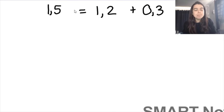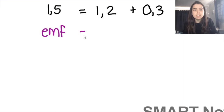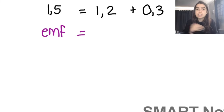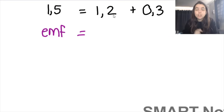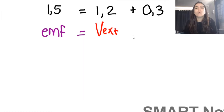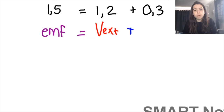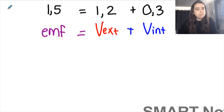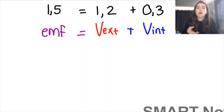In this example, 1.5 equals 1.2 plus 0.3. The 1.5 is the EMF — the voltmeter reading across the battery terminals when the switch was open and no current was flowing. When the switch was closed and current flowed, that reading dropped to 1.2 volts — V external, V terminal, or V load. The 0.3-volt difference is V internal or lost volts. V, EMF, V external, and V internal are all voltages or potential differences.